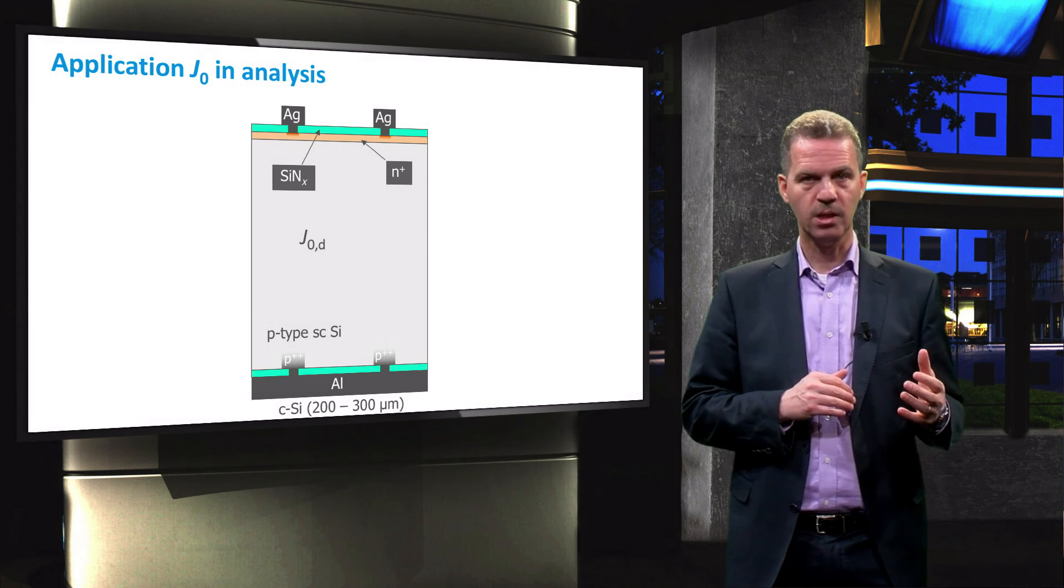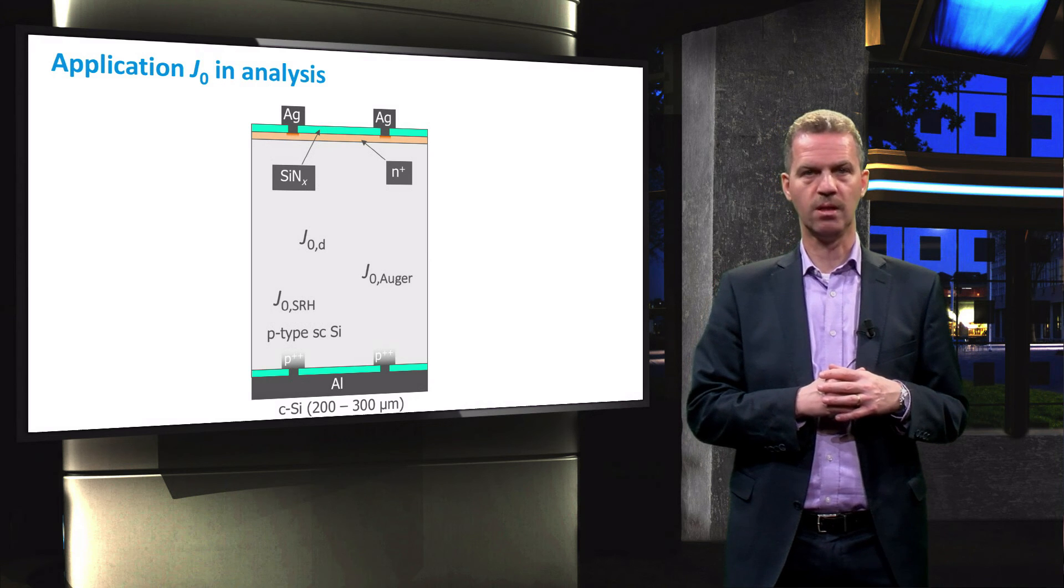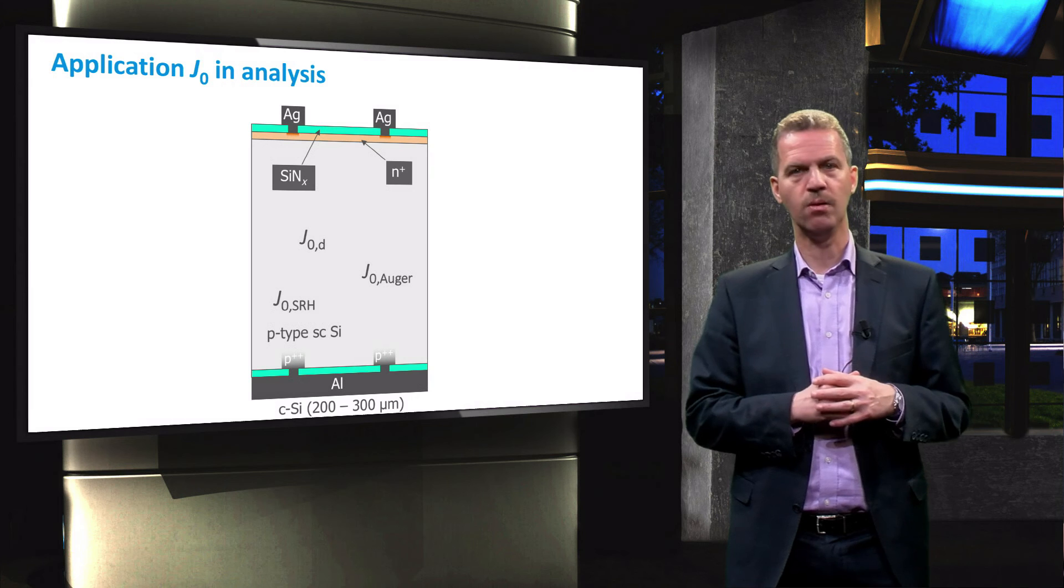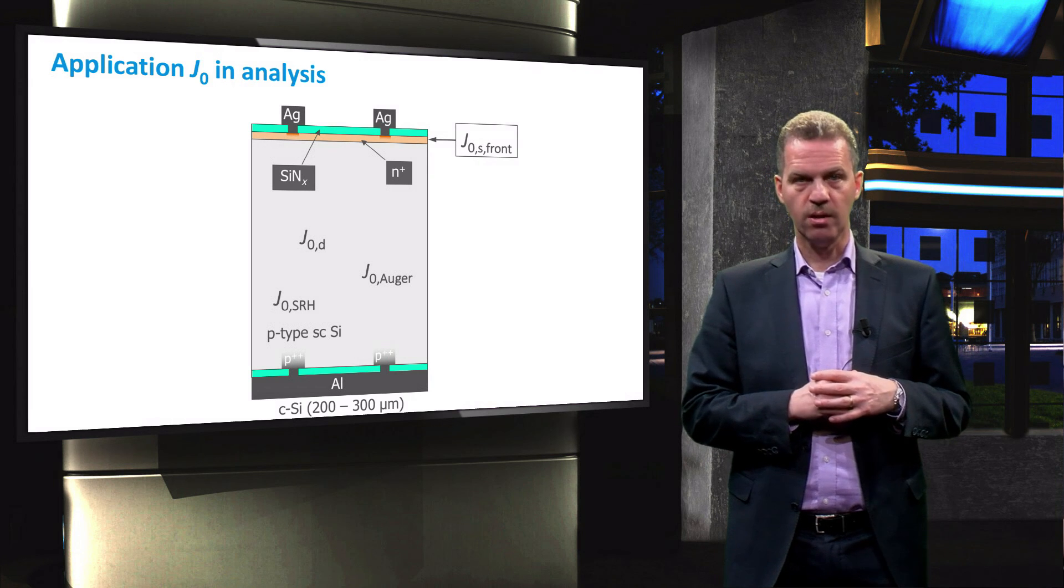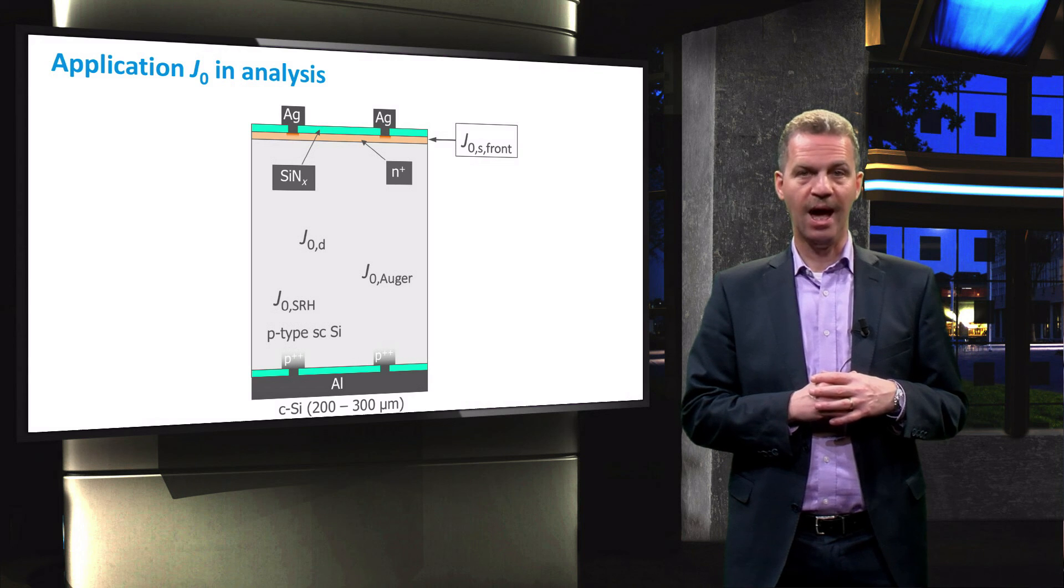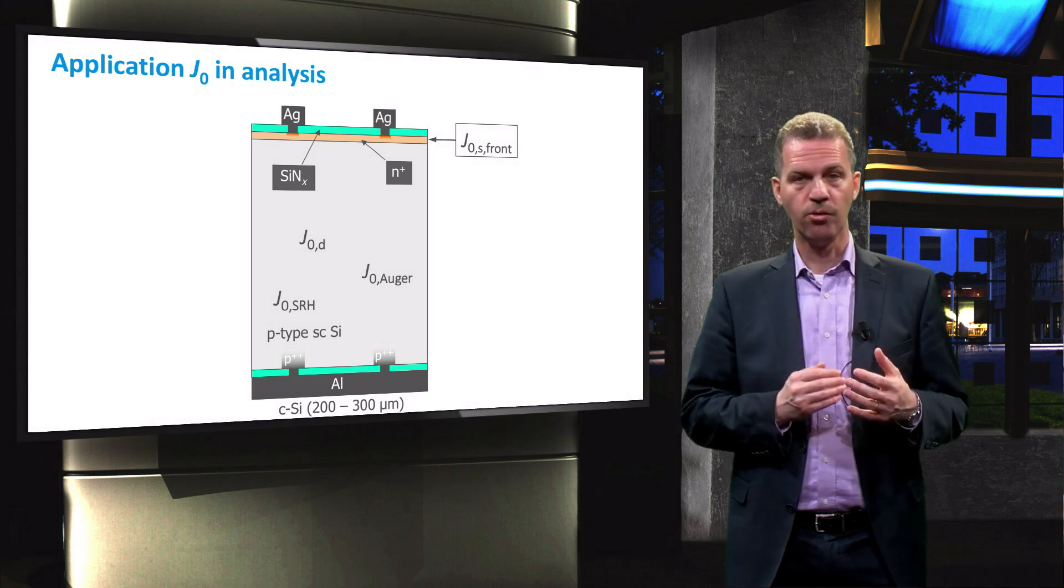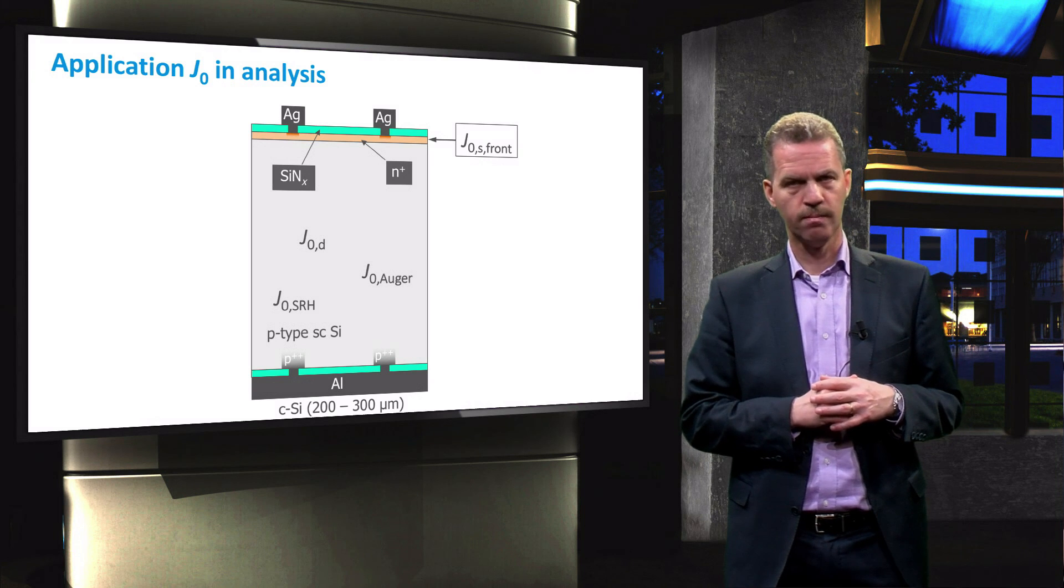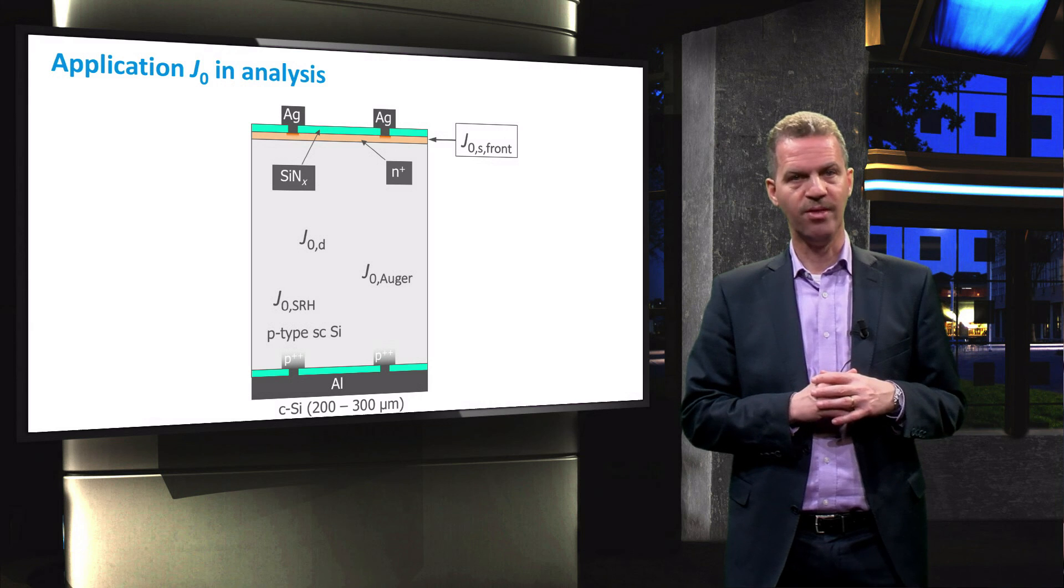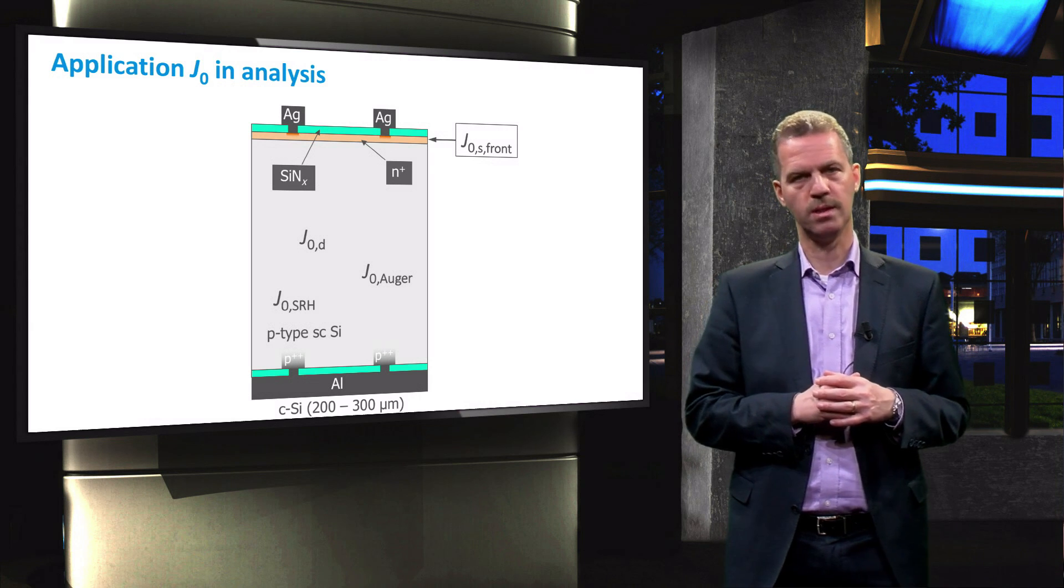Like radiative recombination in the bulk of the device, together with SRH recombination and Auger recombination. The J0 associated with surface recombination evidently only acts at the surface. The total J0 is simply the sum of all components. This, in turn, can then be related directly to the VOC of the solar cell.